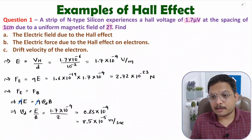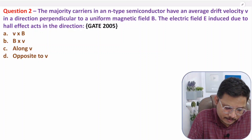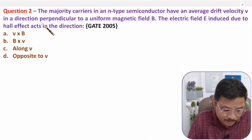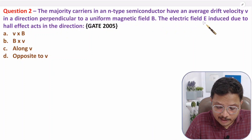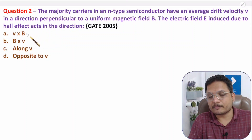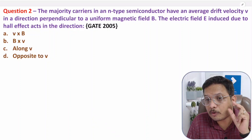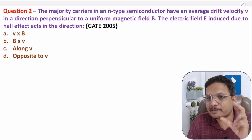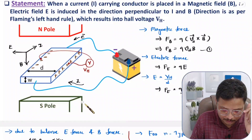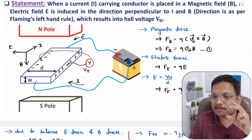Now Example 2, which was in the GATE examination. The question is: the majority carriers in an N-type semiconductor have an average drift velocity v in a direction perpendicular to a uniform magnetic field B. The electric field E induced due to Hall effect acts in which direction? Here, we place the material inside a magnetic field, which induces an electric field.